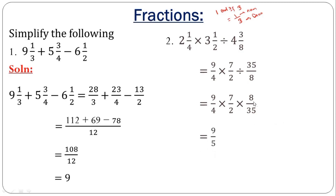After inverting, you simplify. You can see that 2 can divide into 8 to give 4, and this 4 cancels the other 4, leaving 1. Then 7 cancels here, leaving 5. Multiplying everything together gives 9 on top and 5 on the bottom, which gives us one whole number and 4 over 5.